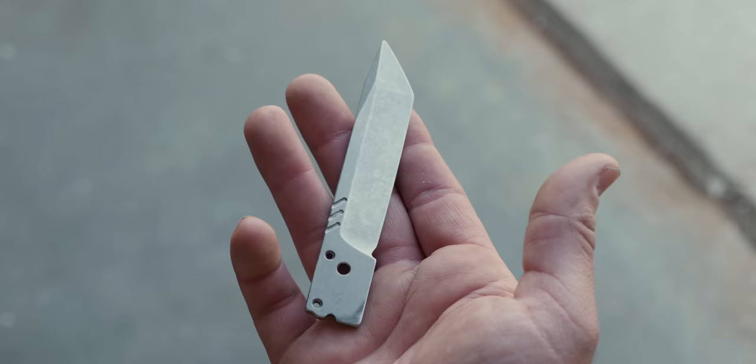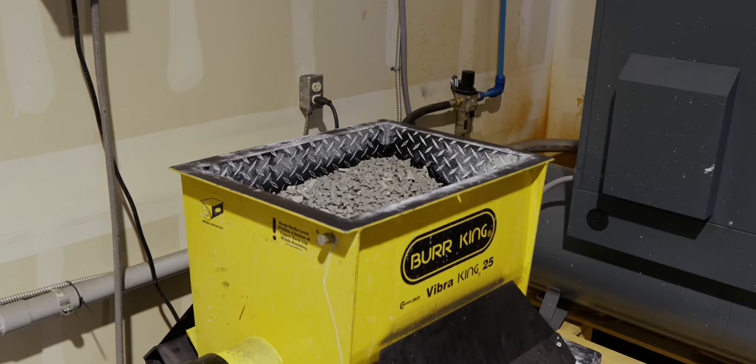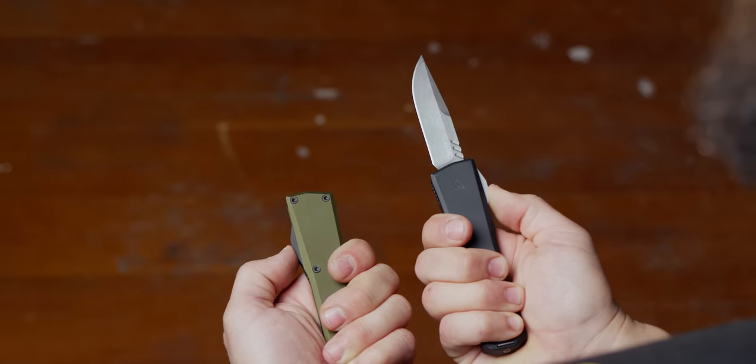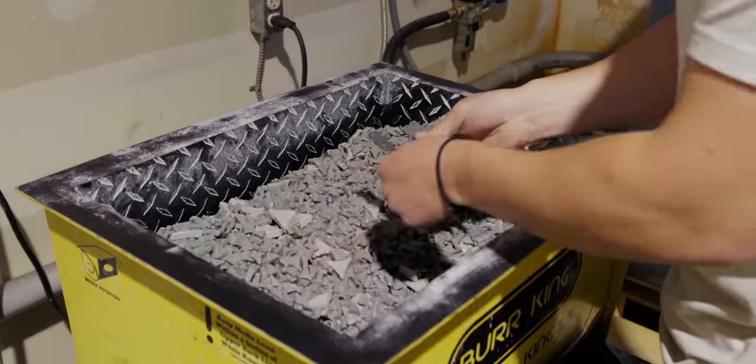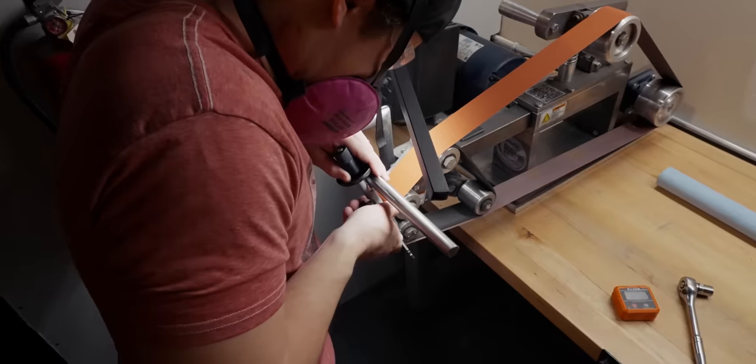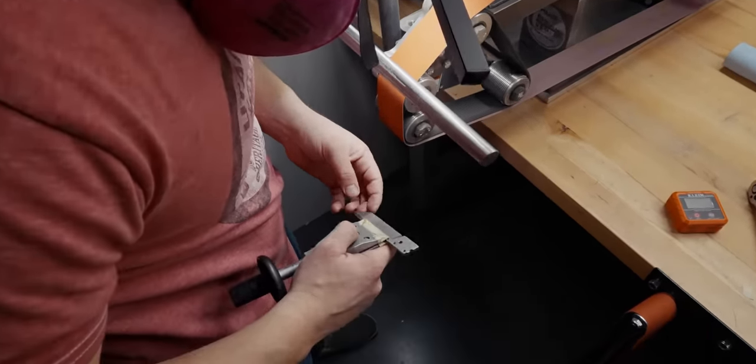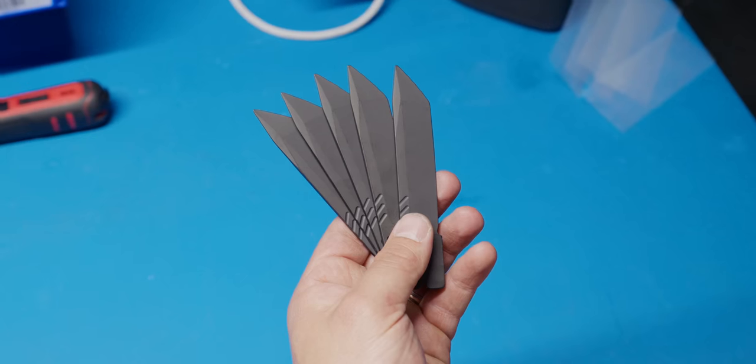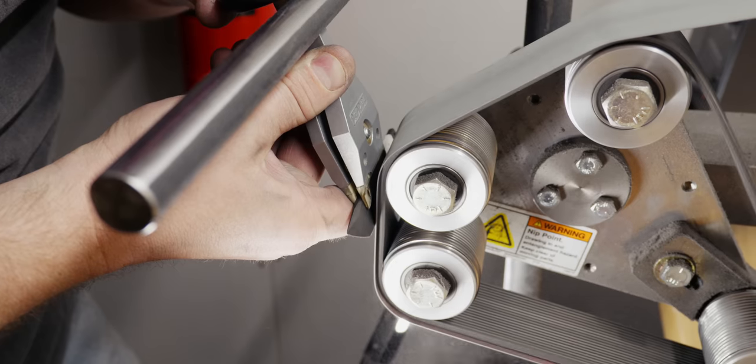After heat treating and bevel grinding, blades can be treated a bunch of different ways. Axial specifically offers two blade finishes, stonewashed and then DLC coating. The stonewashed blades are tumbled after bevel grinding, deep laser engraved, and then sharpened by hand. The coated blades will also be tumbled, deep laser engraved, and then they are sent out for DLC coating to return to Axial for hand sharpening.